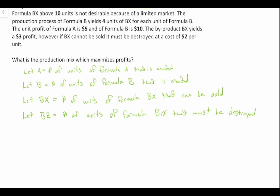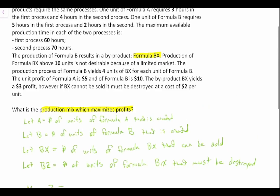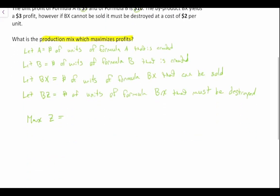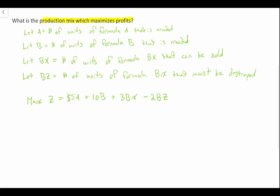The question asks us what production mix will maximize profits. So we're going to say max Z equals — we can sell Formula A for $5 per unit and Formula B for $10 per unit, so 5A plus 10B. We can also sell the byproduct BX for $3, so plus 3BX. But if we cannot sell BX it must be destroyed at a cost of $2 per unit, so minus 2BZ. BZ represents the number of units of Formula BX that must be destroyed.